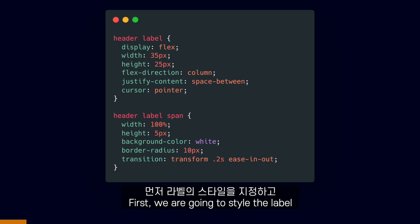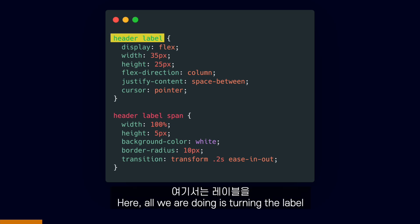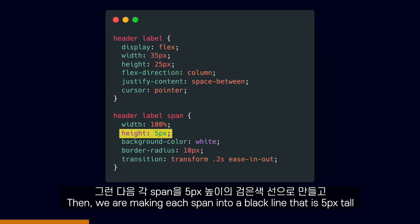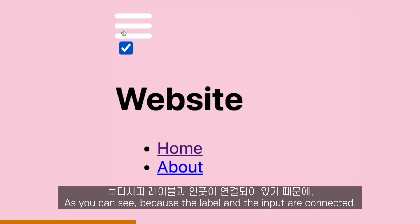First, we're going to style the label and create the lines. All we are doing is turning the label into a flex container with a width of 35 pixels and a height of 25 pixels. Then we are making each span into a black line that is 5 pixels tall with a nice border radius and a transition for transformations.